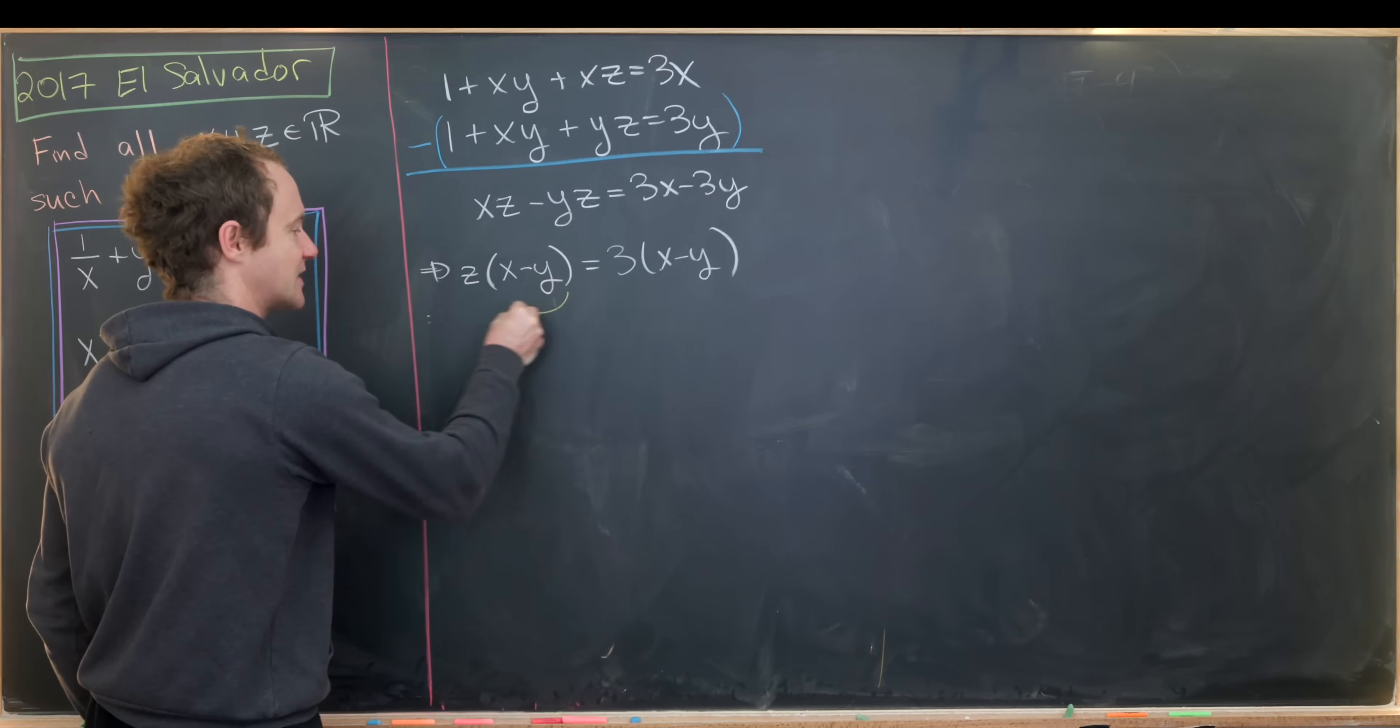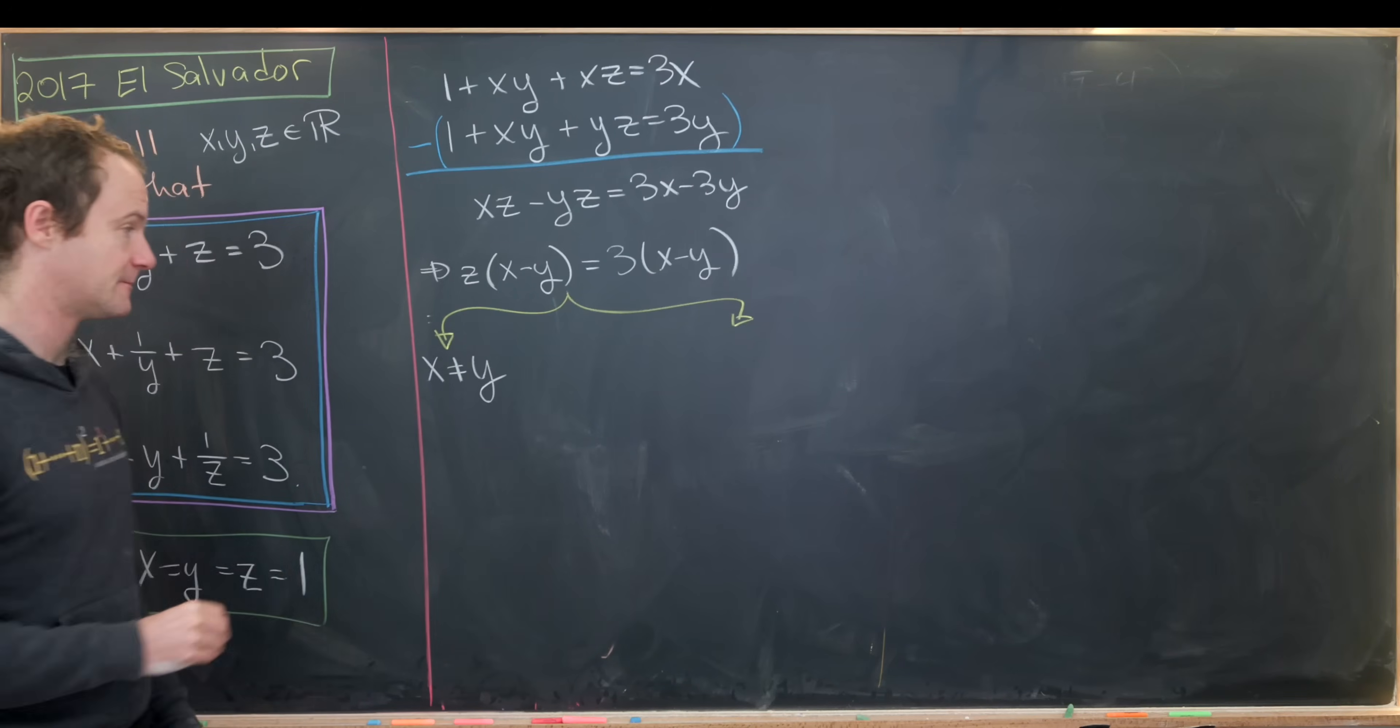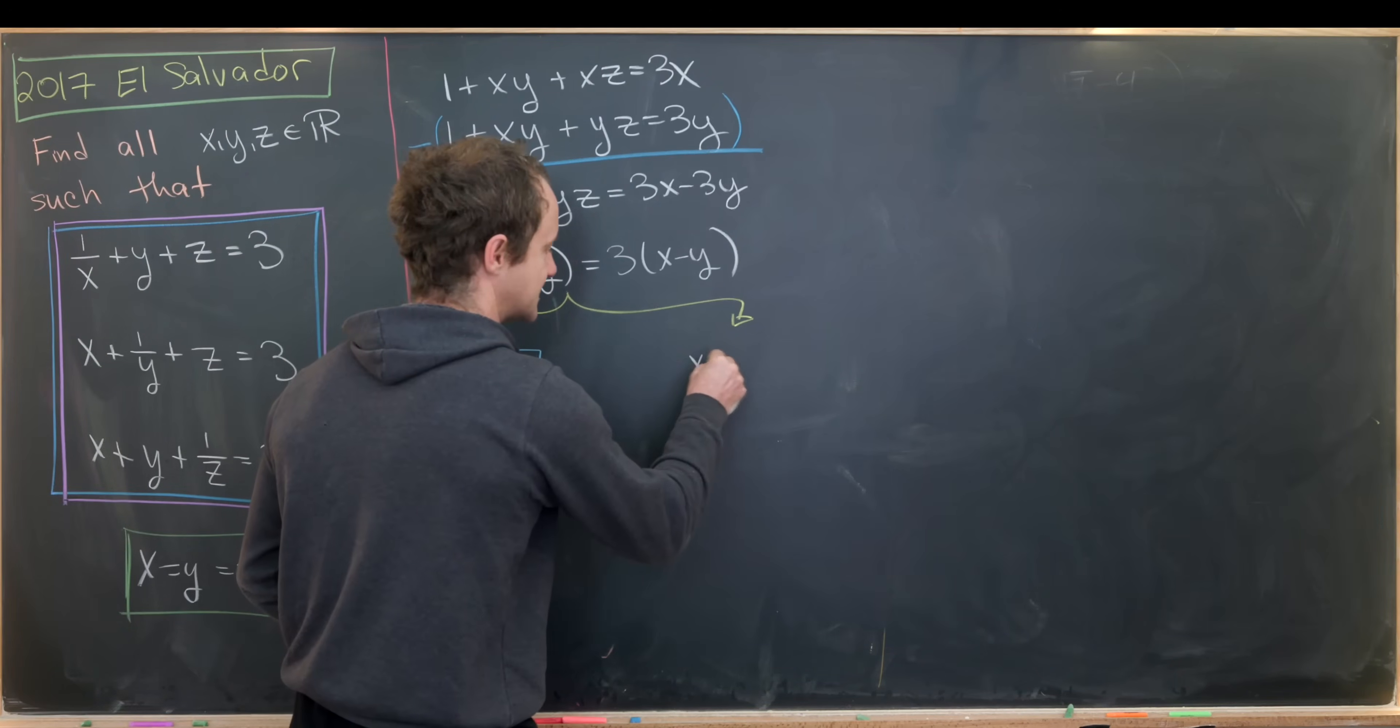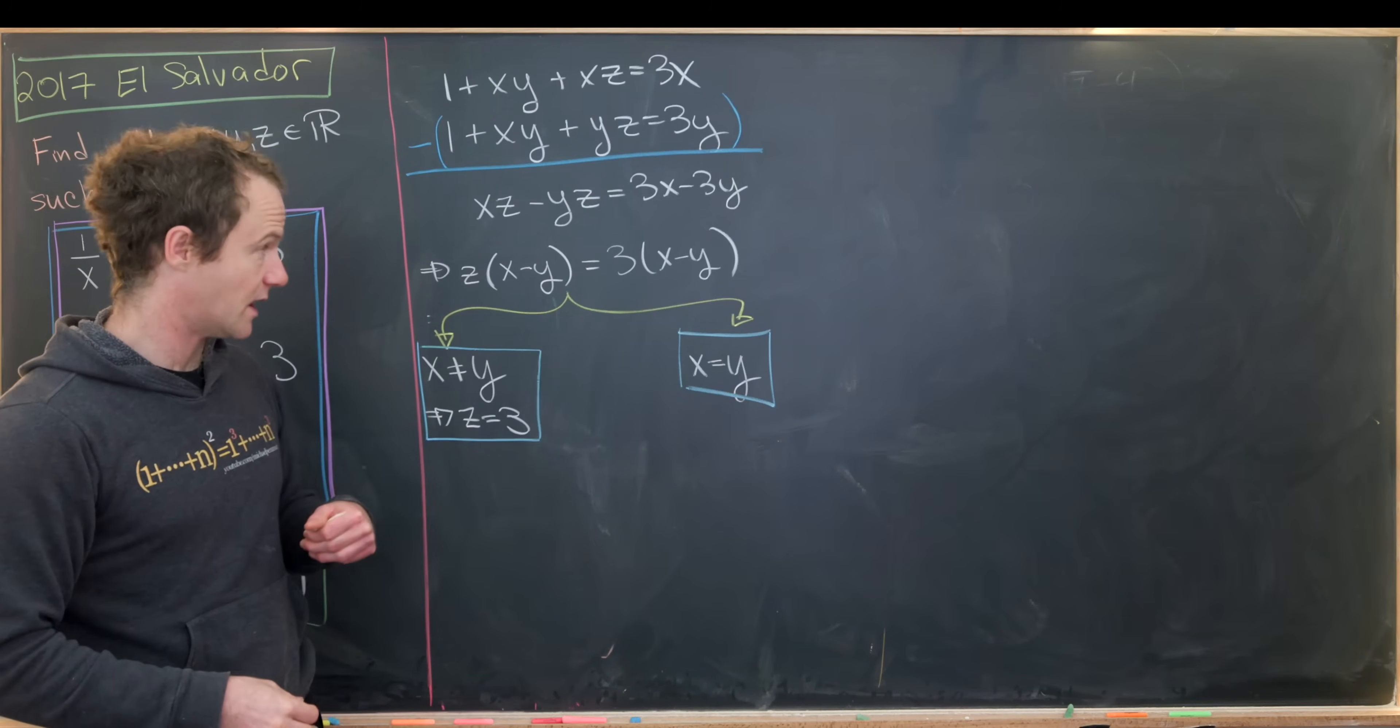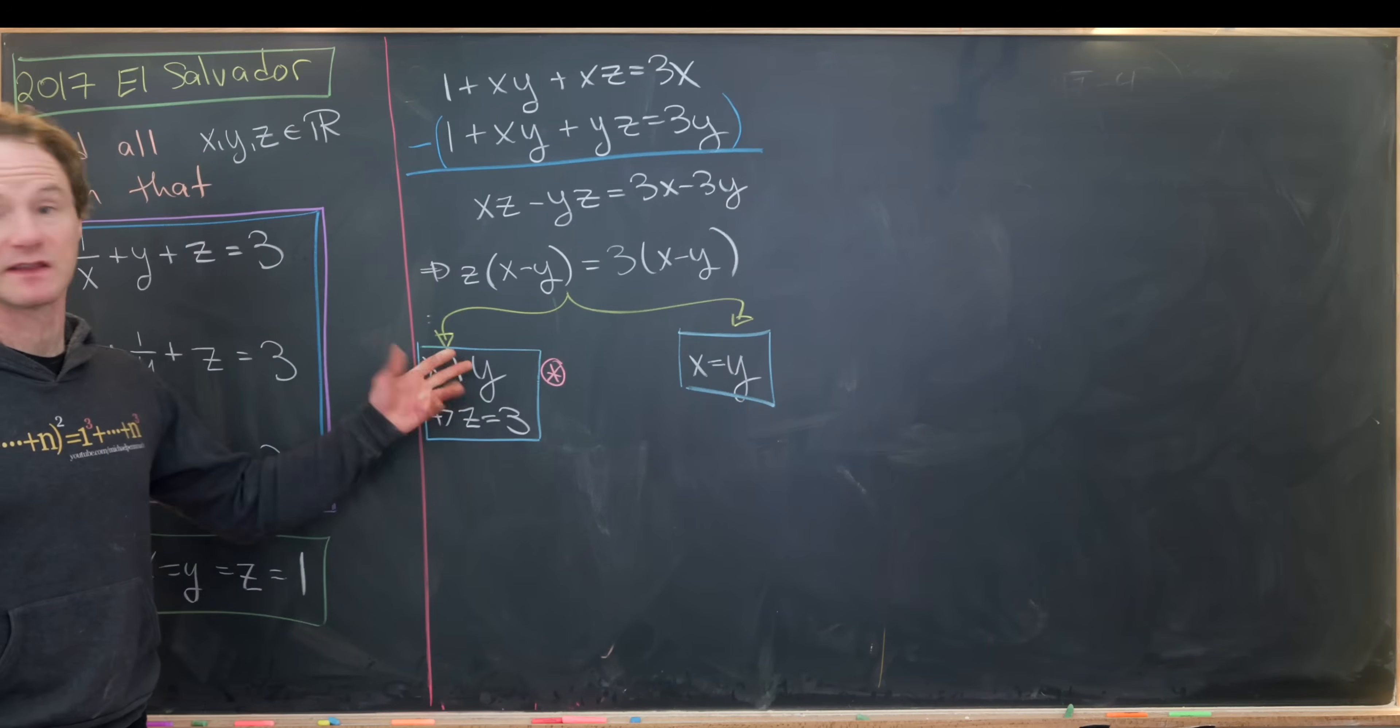That's going to split naturally into two cases which we will investigate separately. The first case is what happens if x is not equal to y. If x is not equal to y we can cancel this x minus y from both sides of the equation and that tells us that z is equal to 3. And then the second case is what happens if x equals y. But notice if we got x equal to y we can't say anything about z at the moment because we just have 0 equals 0. We're going to attack this one first.